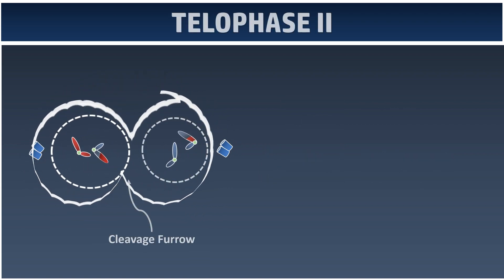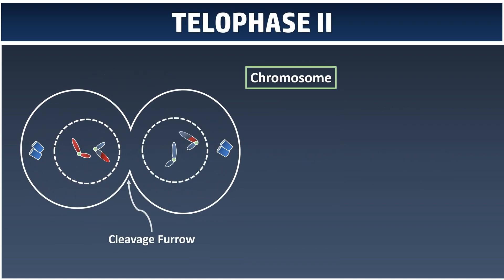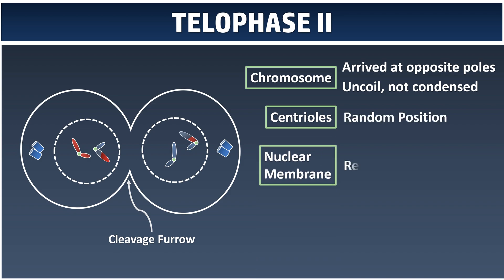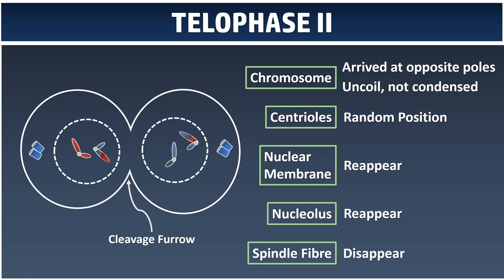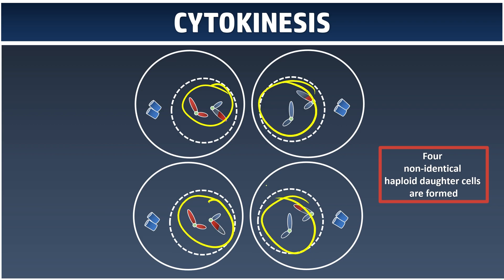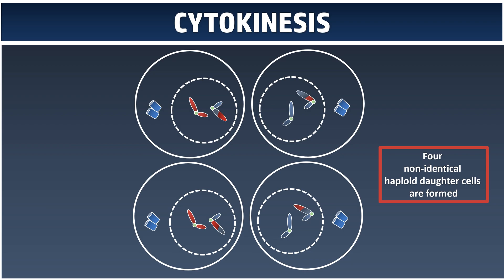Now we have Telophase II, where each of the sister chromatids arrives at the opposite poles, and the process of uncoiling and decondensing happens again. The centrioles are at random positions, both the nuclear membrane and nucleus will reappear and form back, and the spindle fiber disappears. Since we started with two cells each undergoing division a second time, two produced four haploid daughter cells, and each of them is non-identical to each other. This is the most important outcome: producing genetic variations.